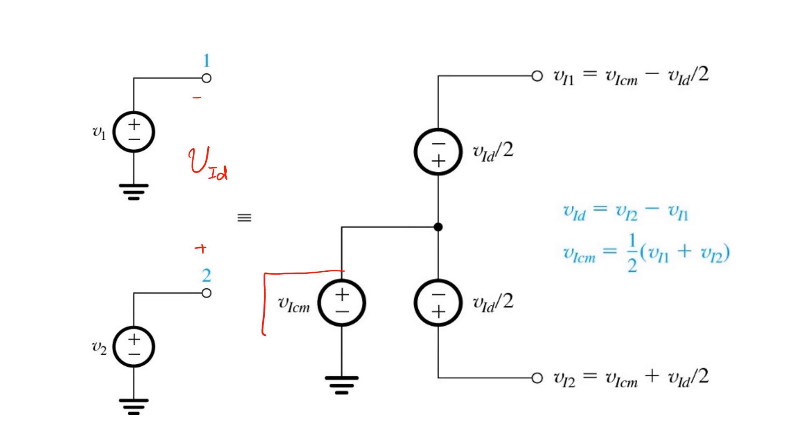vicm is simply equal to the average of the two input voltages. The ideal op amp amplifies only the differential component of the input and completely ignores the common mode input.